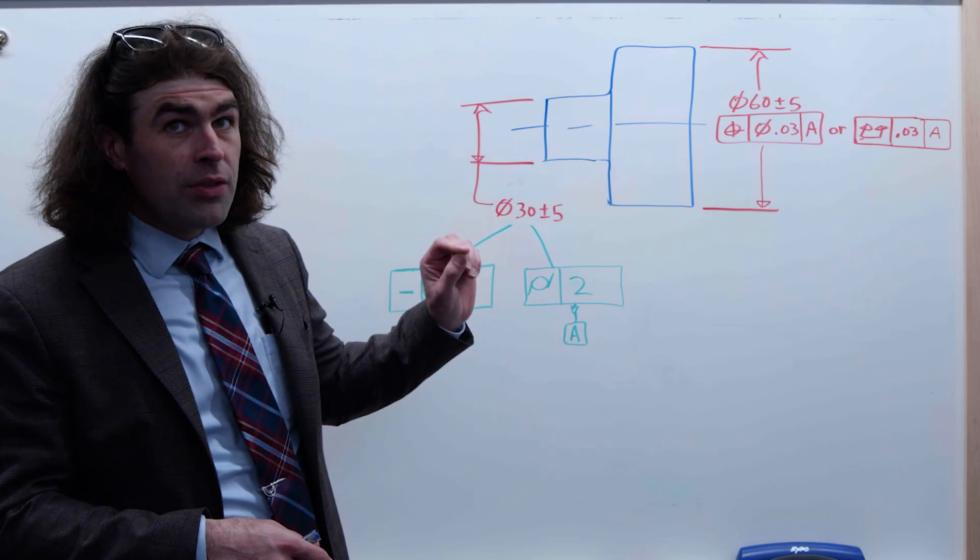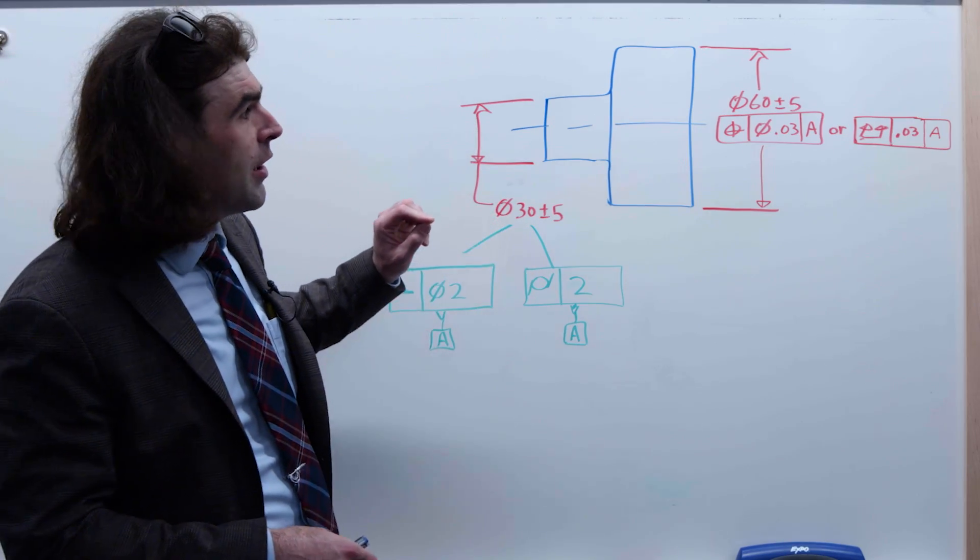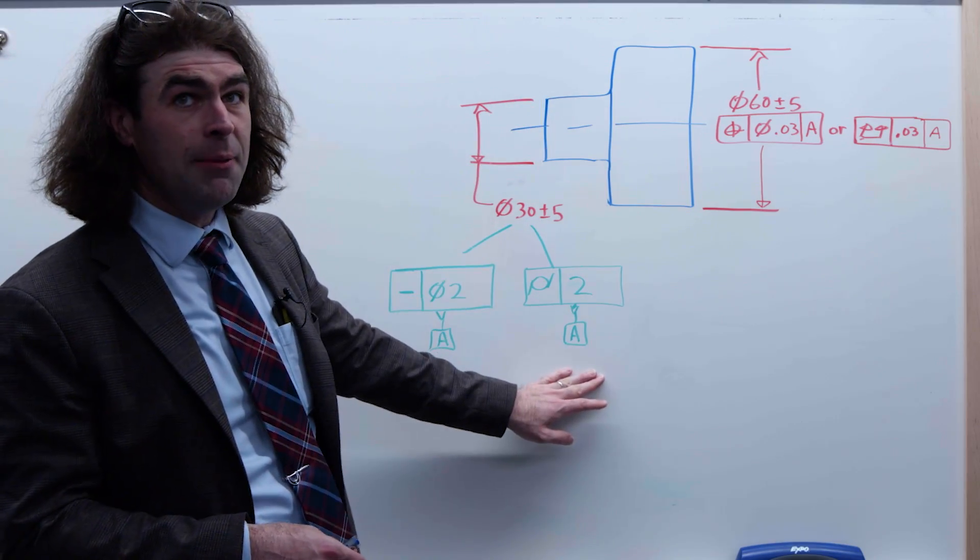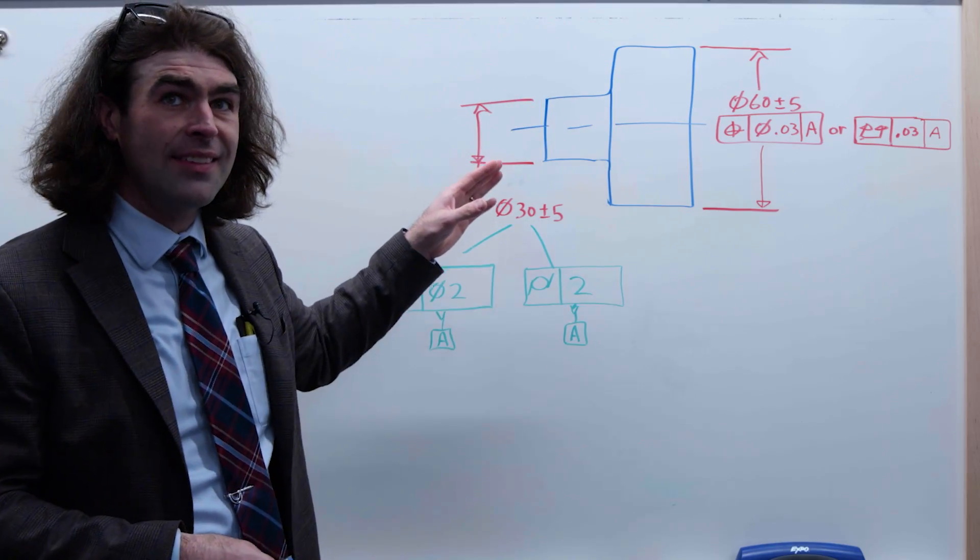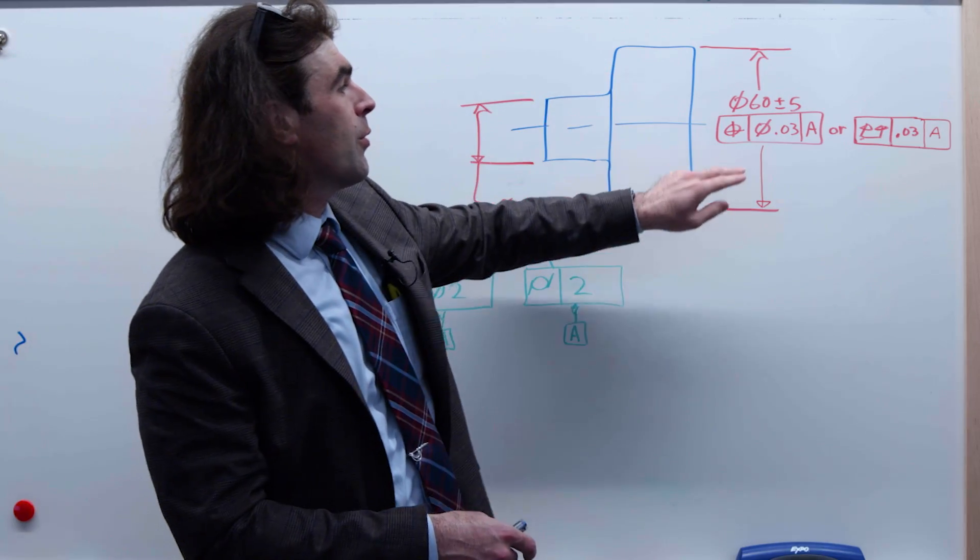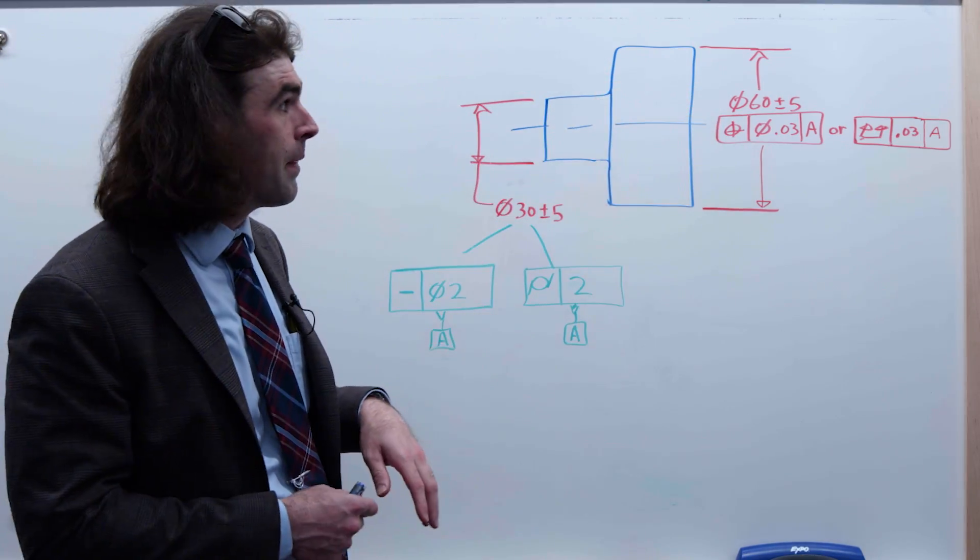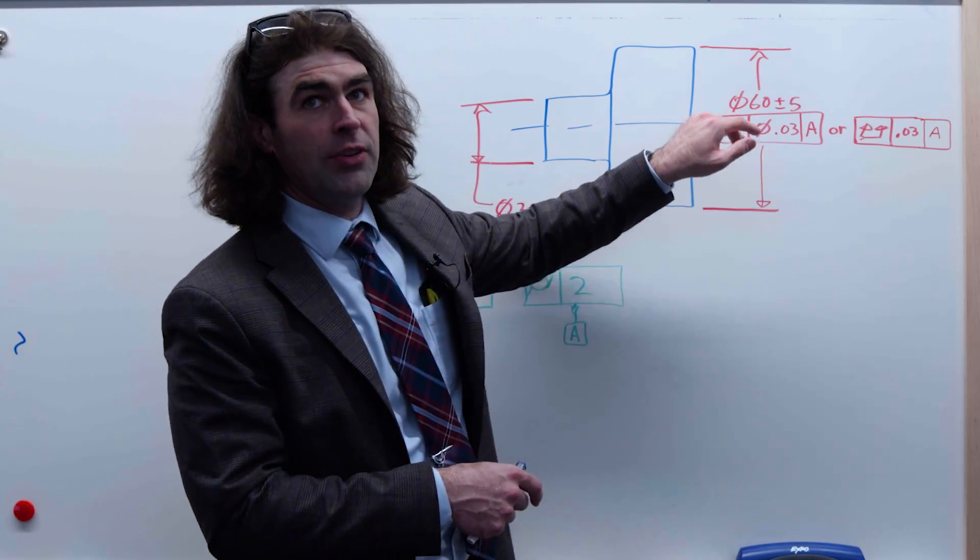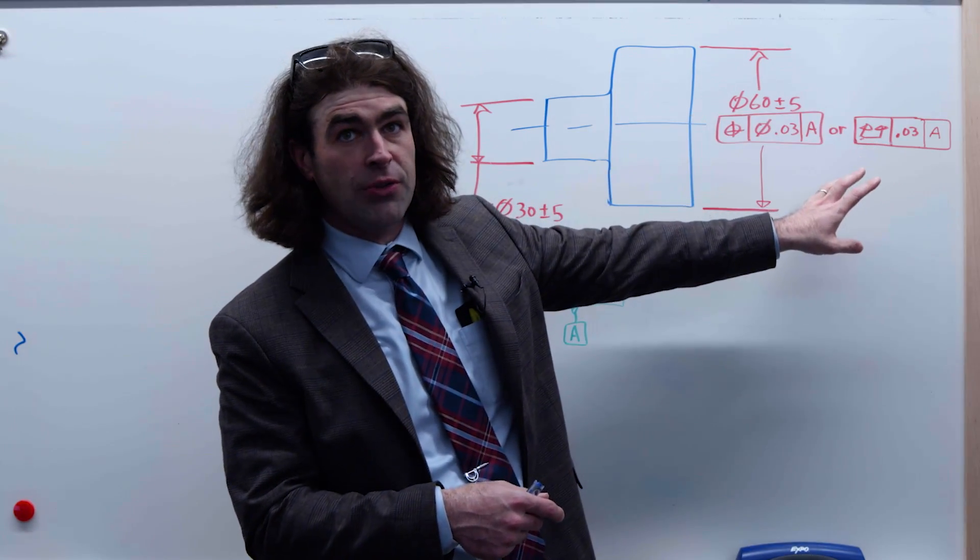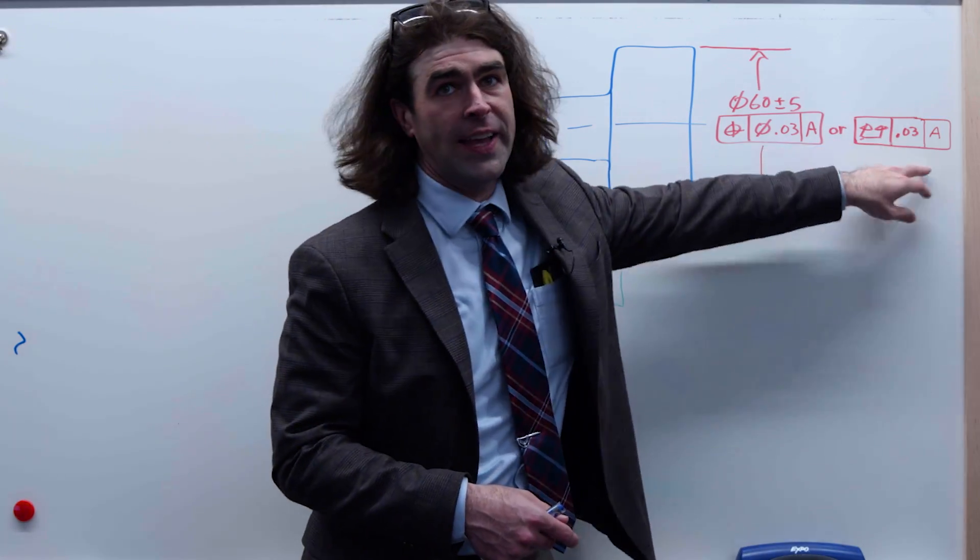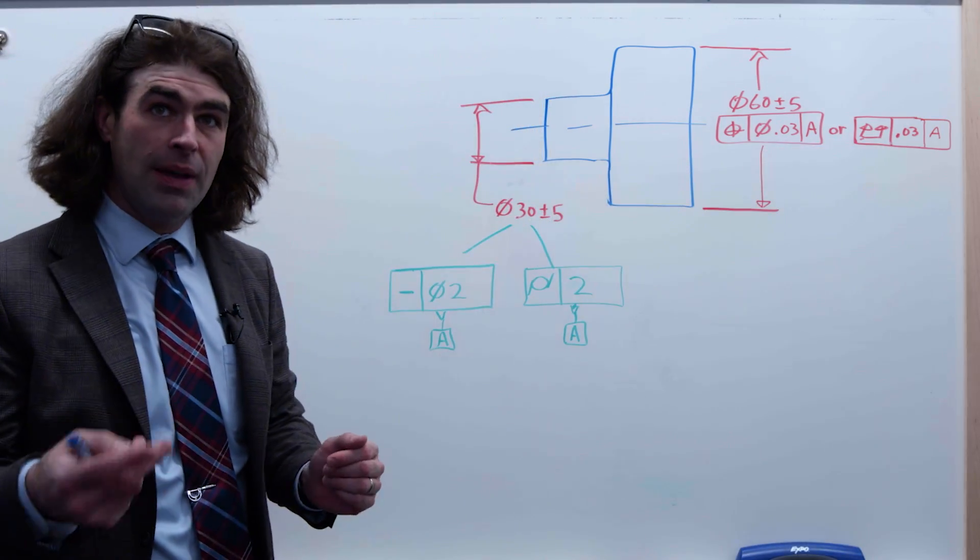Now the version of the question I get, say we're going to have this cylinder serve as a datum A. So we want the axis of that cylinder and we're going to position this larger cylinder to the axis of that. Now we can position it with position or run out to control the coaxiality in the form. It doesn't matter too much. What matters is we're calling it out to datum A.